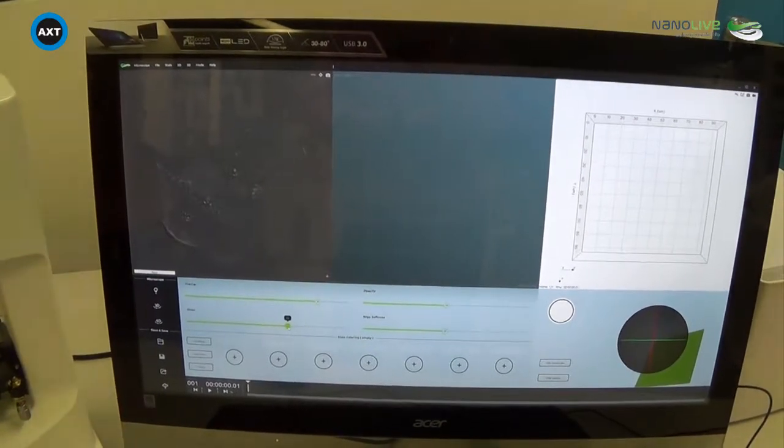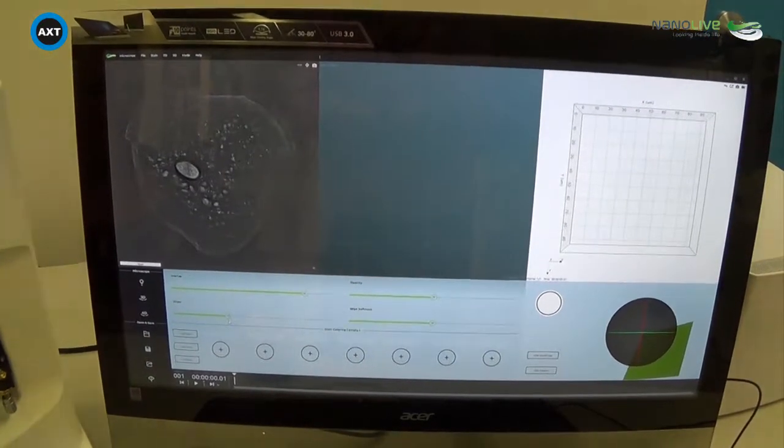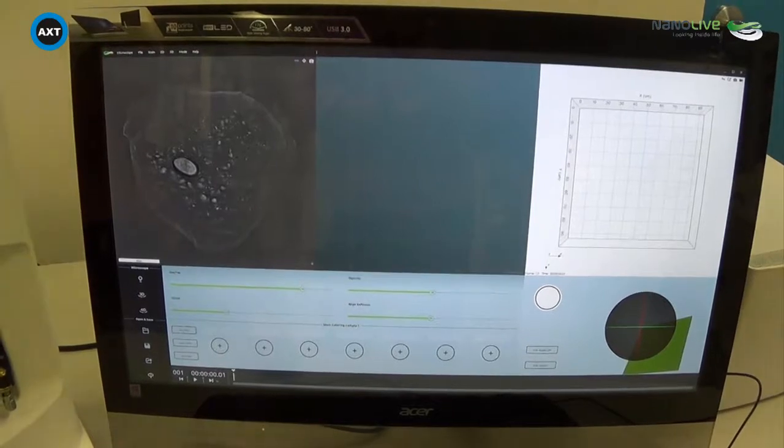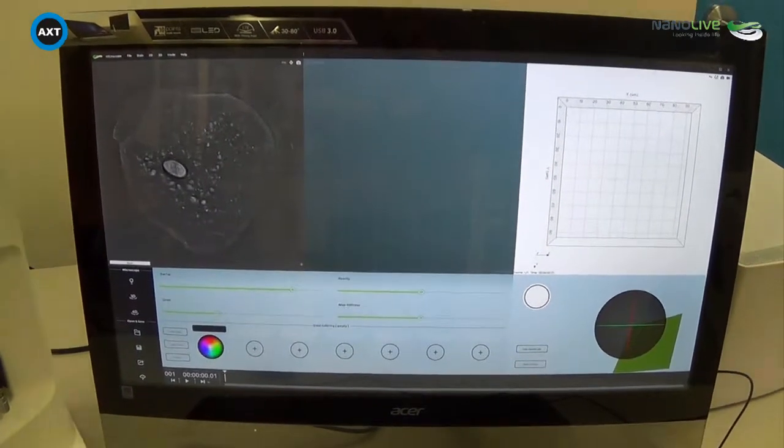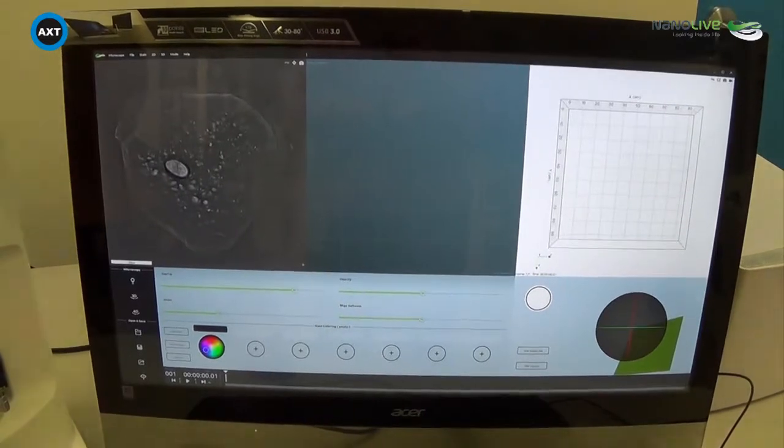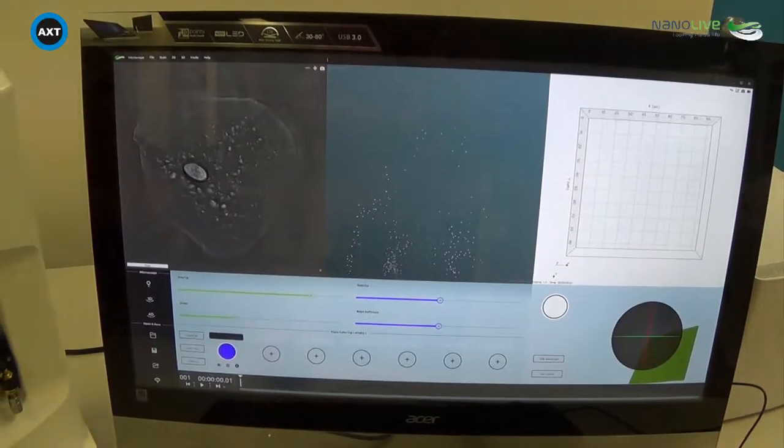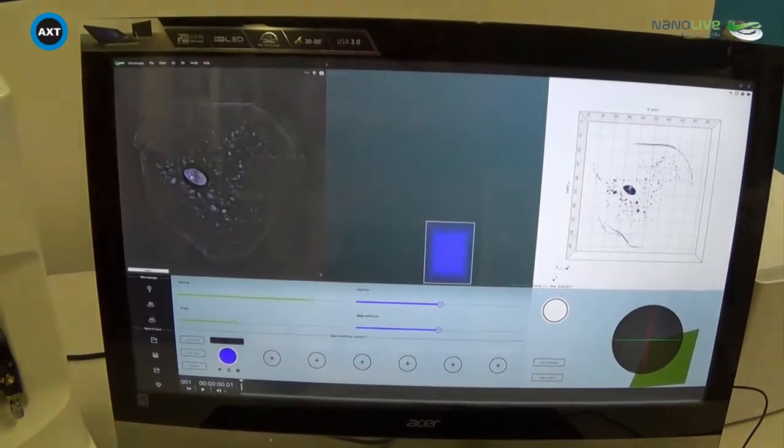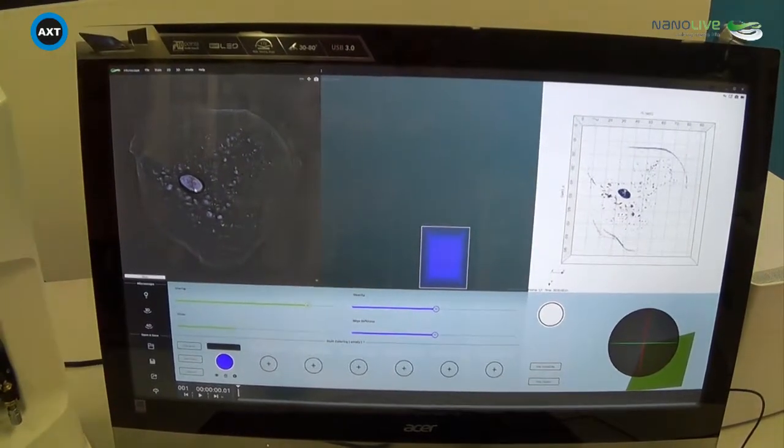So the power of the Steve software is that we can actually stain these cells digitally. And it's quite simple to do. Down the bottom here we have a series of stains that we can apply. So if I just hit this plus sign, we can choose blue color and come to our nucleus and add that color to the nucleus. When I've clicked a few pixels within the nucleus and colored them blue,